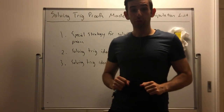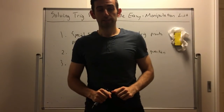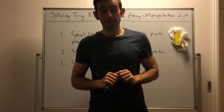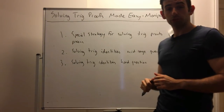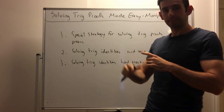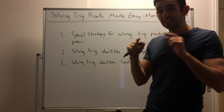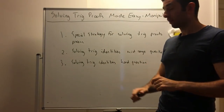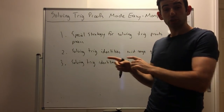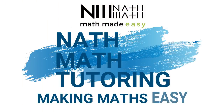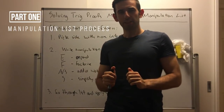Today we're doing solving trigonometry proofs made easy using the manipulation list, which is a special strategy I invented. We're going to go over this special strategy for solving trig proofs, the process, then a mid-range question for solving trig identities, and if you stick to the end, a hard question for solving trig identities — so if you're doing higher level maths, make sure you stick to the end.